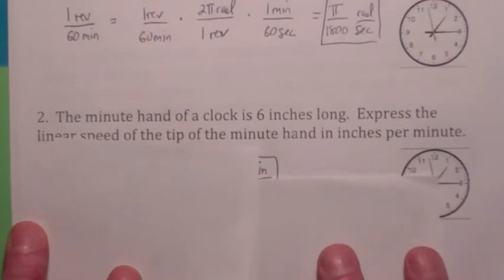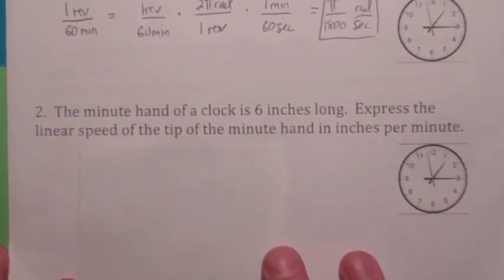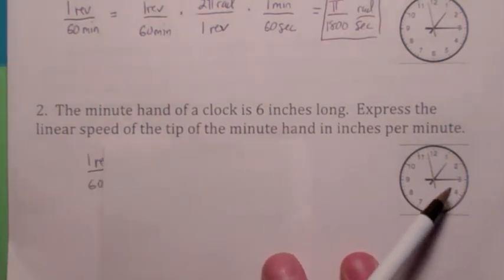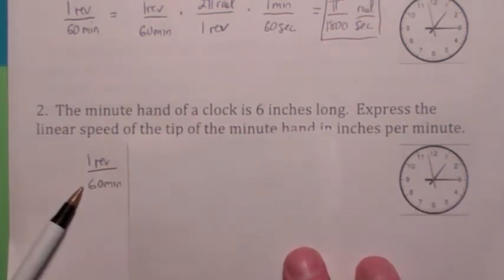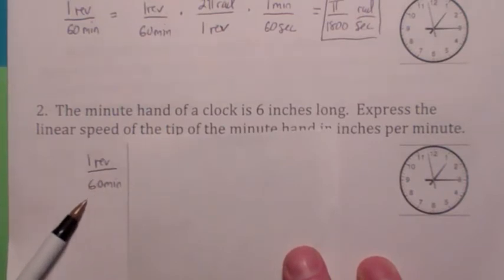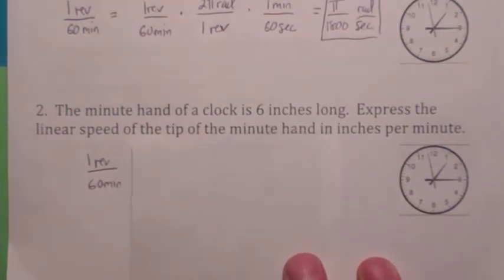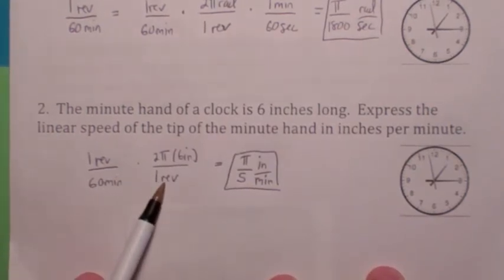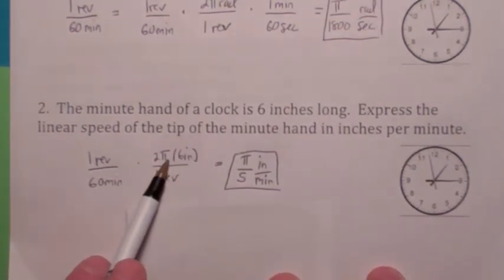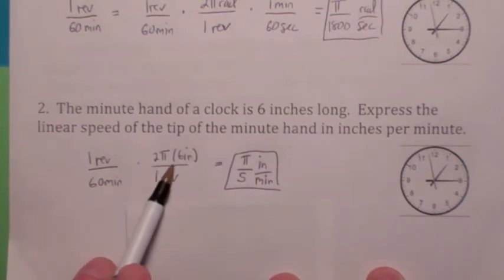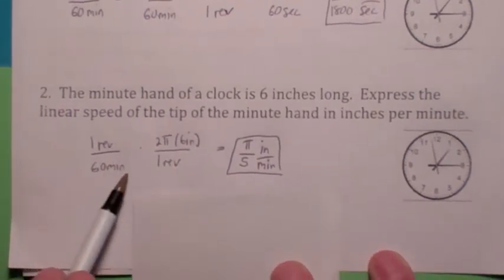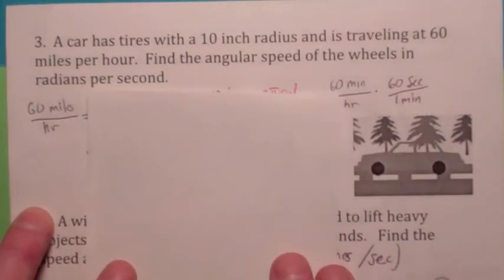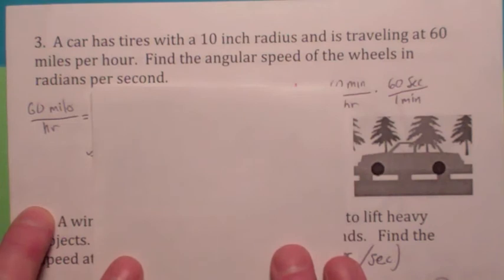Now we're going to find the linear speed of the minute hand. We're going to convert the angular speed — one revolution per hour, one revolution every 60 minutes — to linear speed in inches per minute. The key idea is that one revolution is not only 2 pi radians, it's also the circumference: one revolution equals 2 pi r. The revolutions cancel and you have pi over 5 inches per minute. It's amazing how simple that becomes when you just look at the units.